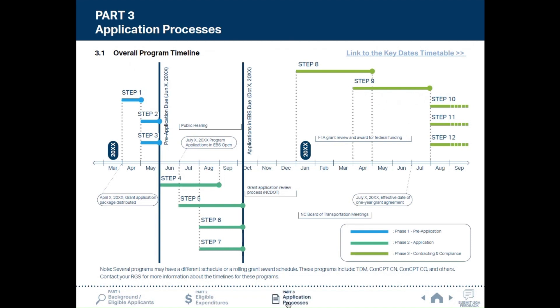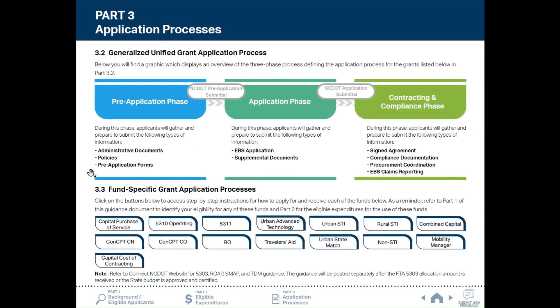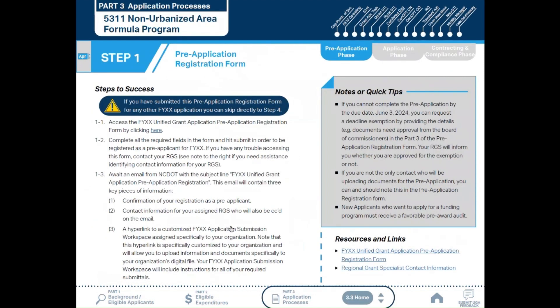As shown in Part 3.2, the UGA consists of three phases: pre-application phase, application phase, and contracting and compliance phase. Within each of these phases, there are specific steps that the applicant must complete. The details of these steps vary by funding program. To apply for each funding program, click on that program button in Part 3.3 to be guided through the application. For additional guidance on each step, use resources and links on the bottom right corner.